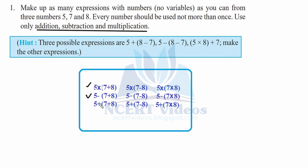That is, we will use 5 plus here, 5 plus here, 5 plus here, and inside we will just copy this column: 7 plus 8, 7 minus 8, 7 into 8. So, this is the procedure in order to make different expressions for the given numbers. We have made expressions for 5, 7, and 8. This was question number 1.